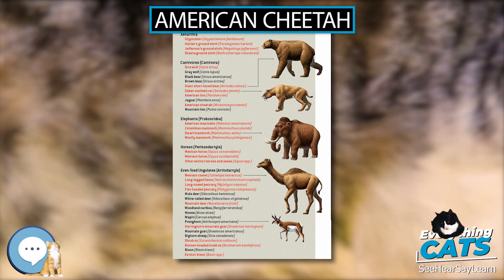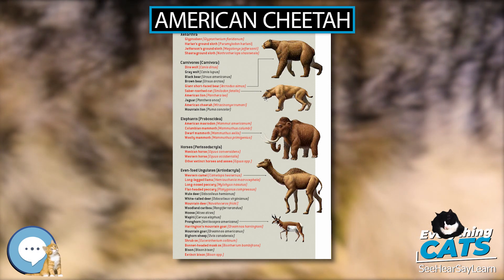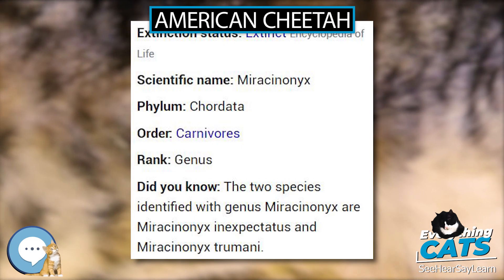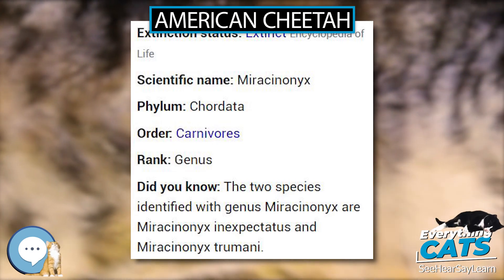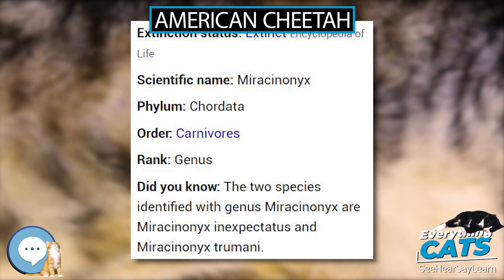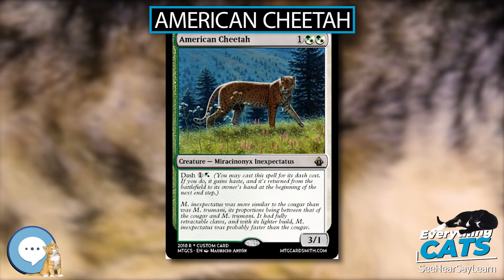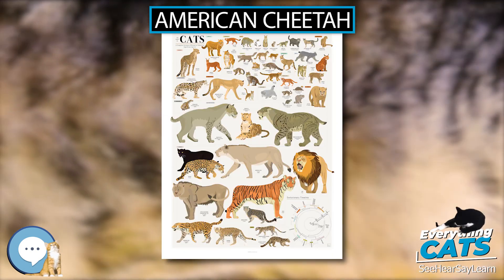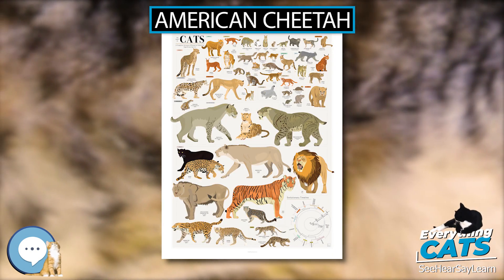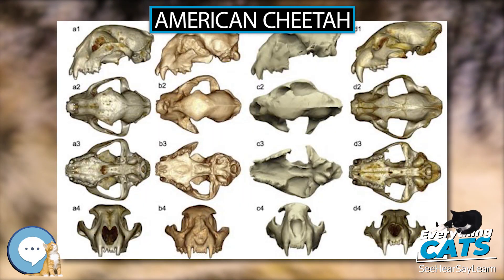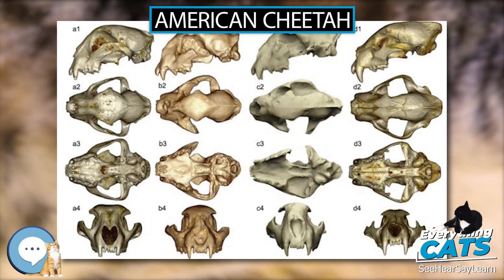M. Inexpectatus was more similar to the cougar than was M. Trumini, its proportions being between that of the cougar and M. Trumini. It had fully retractable claws, and with its lighter build, M. Inexpectatus was probably faster than the cougar. Due to its retractable claws, it possibly was more adept at climbing than M. Trumini.